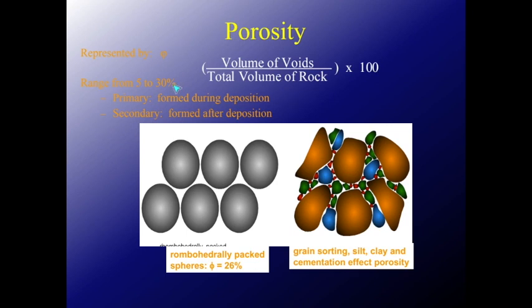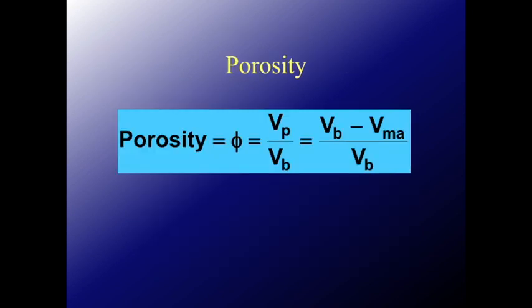For the conventional reservoir, the average porosity might be around 30 percent, maybe 35 percent — it depends on the type of rocks, whether sandstone, limestone, or any other rocks.